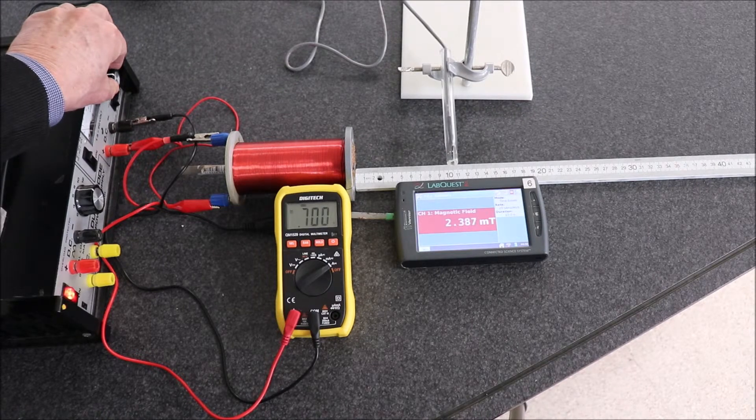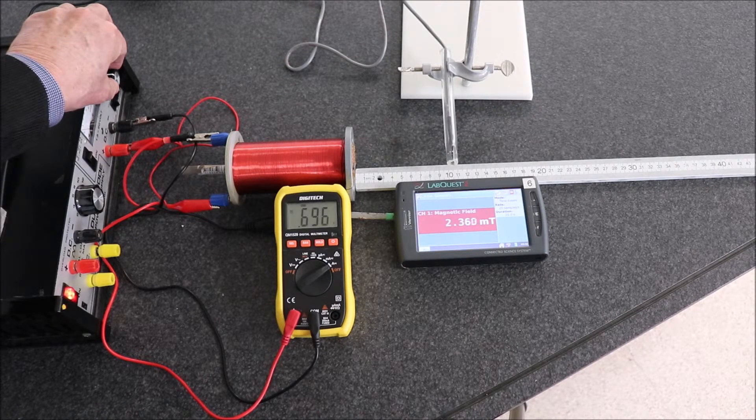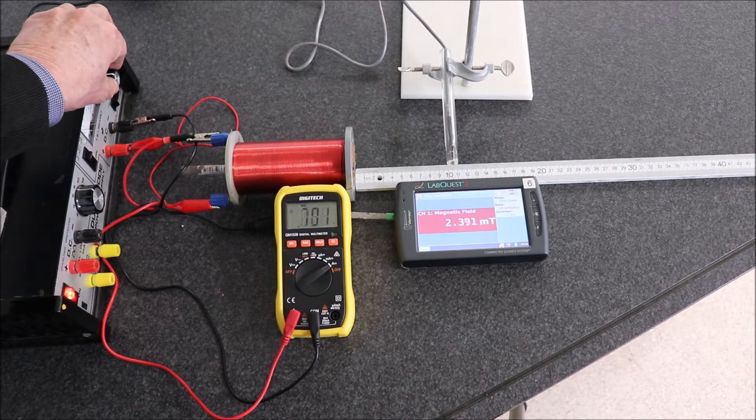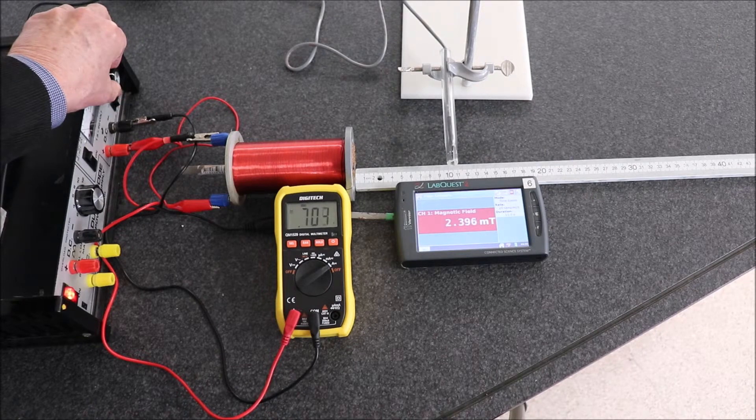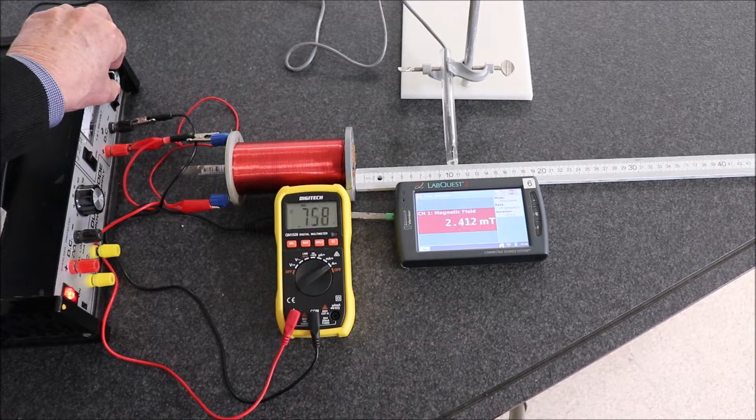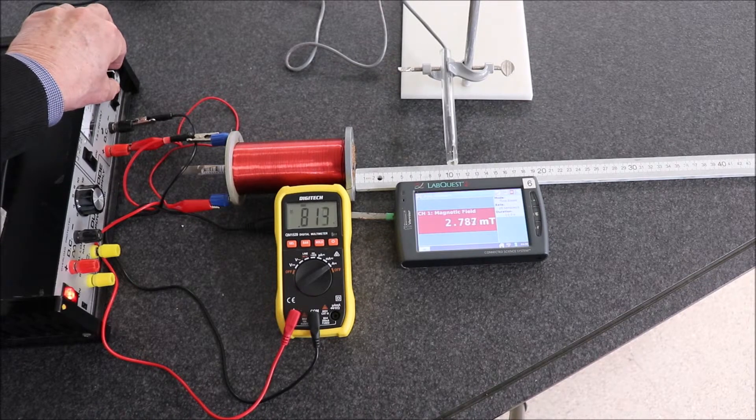0.7, about 2.4 something like that. Now in theory the magnetic field strength should be proportional to the current.